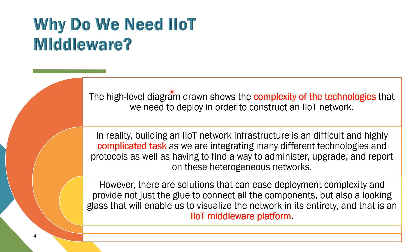Based on the previous figure, it shows how a high-level diagram shows the complexity of the technologies that we need to deploy in order to construct an IIoT network. In reality, if we want to build the IIoT network infrastructure, it is a very difficult and highly complicated task as we are integrating many different technologies and protocols, as well as having to find a way to administer, upgrade, and report on this heterogeneous network. Therefore, as a solution that can ease deployment complexity and provide the glue to connect all the components, as well as enabling us to visualize the network in its entirety — this is the use of the IIoT middleware platform.